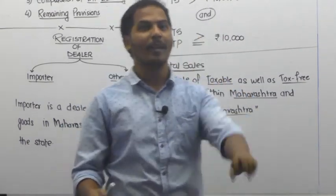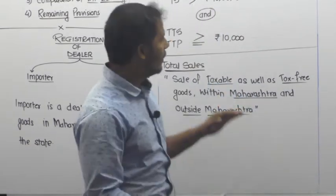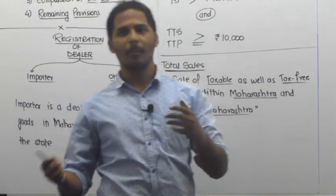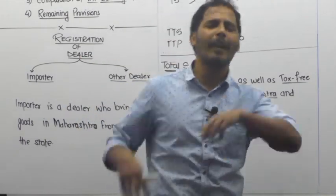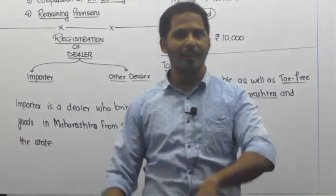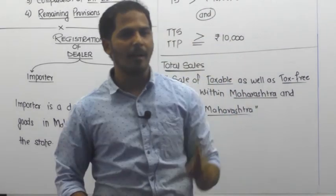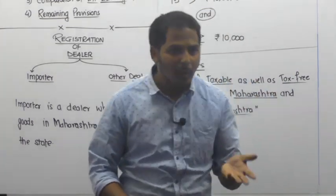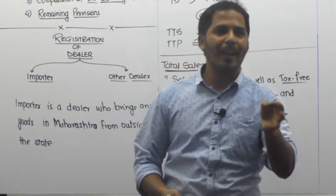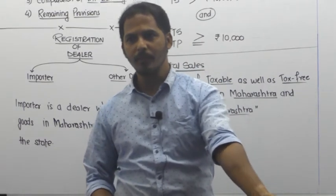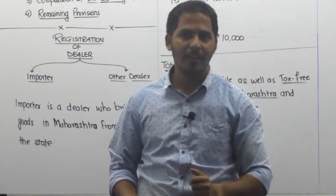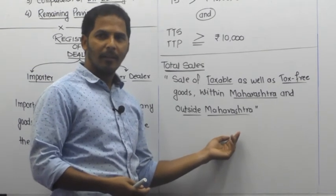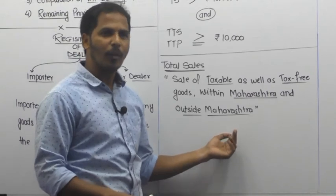For example, if a dealer sells goods in China — does it come in Total Sales? Yes, because outside Maharashtra is included. A common mistake students make: if data gives taxable sales and tax-free sales separately, don't add the total again if a combined total is already given. All sales — taxable, tax-free, within Maharashtra, outside Maharashtra — all come into Total Sales.